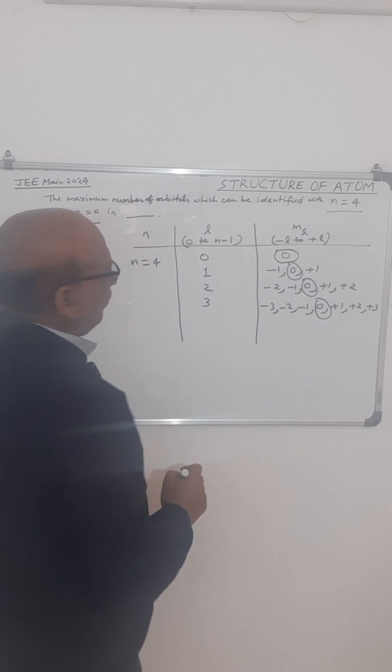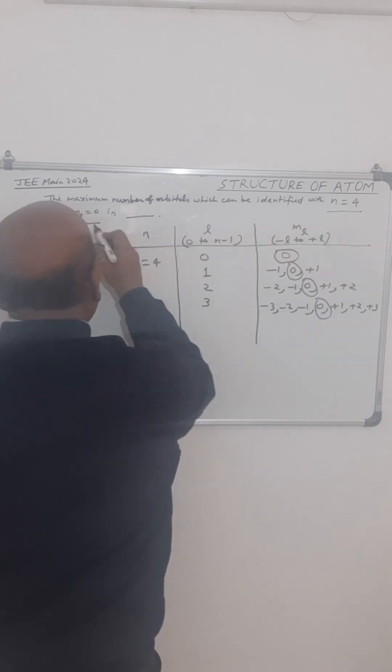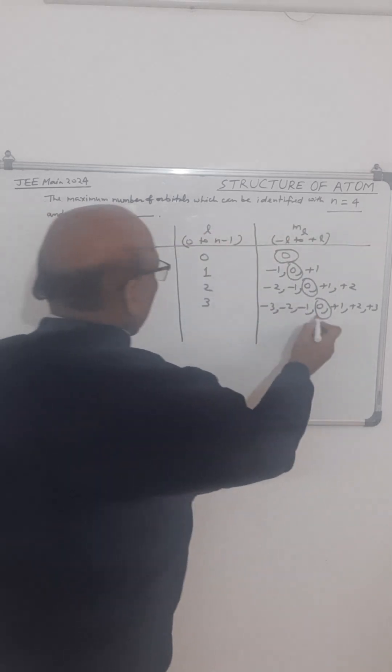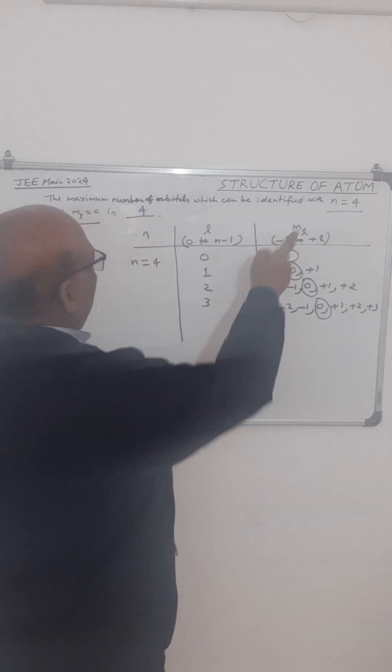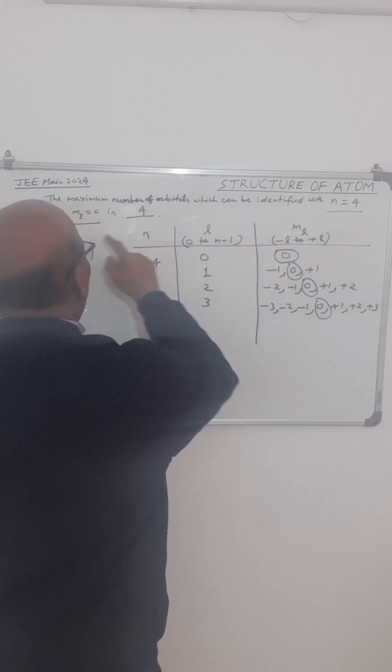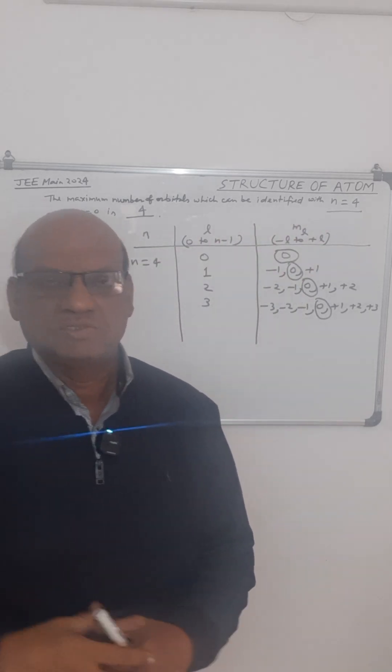There are total 4 orbitals which correspond to n equal to 4 and ml equal to 0. So our answer is 4. The number of orbitals that can be identified with n equal to 4 and ml equal to 0 is 4. Thank you and wish you all the best.